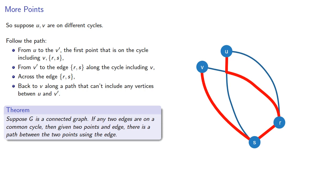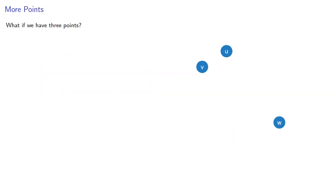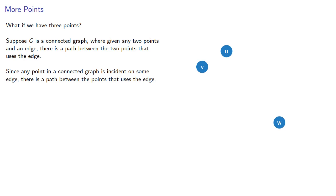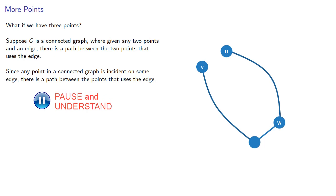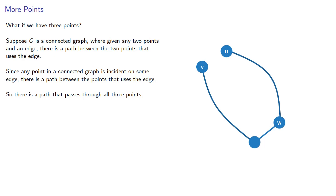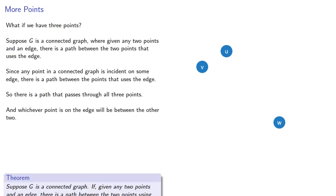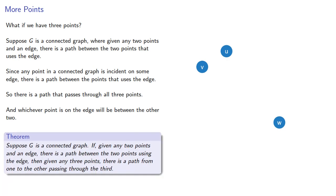Notice we've switched from cycles to paths. So what if we have three points? Suppose g is a connected graph where, given any two points and an edge, there is a path between the two points that uses the edge. Since any point in a connected graph is incident on some edge, we can take any of these points and form an edge — there is a path between the points that uses the edge. So there's a path that passes through all three points, and whichever point is on the edge will be between the other two. And so given any three points, there is a path from one to the other passing through the third.